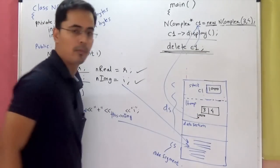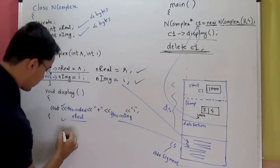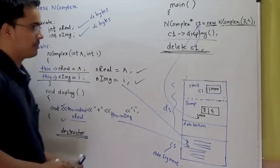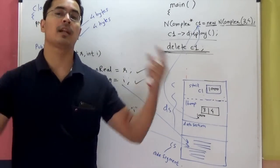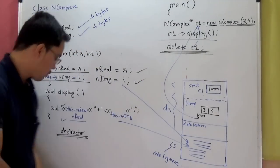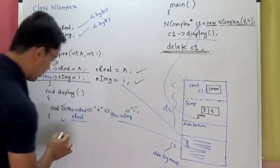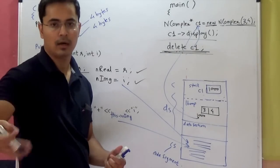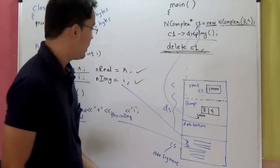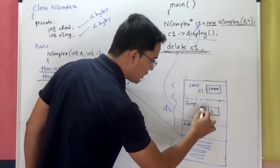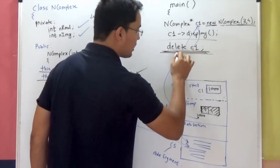When you call delete C1, what happens is that a special member function of this class NComplex called the destructor is called. A destructor does the exact inverse job of your constructor — it is used to de-initialize the data. And like constructors, if you do not write a destructor yourself, C++ will give you a default destructor. So when you call delete C1, first that default destructor is invoked, and then the memory for C1 will be released and de-allocated.